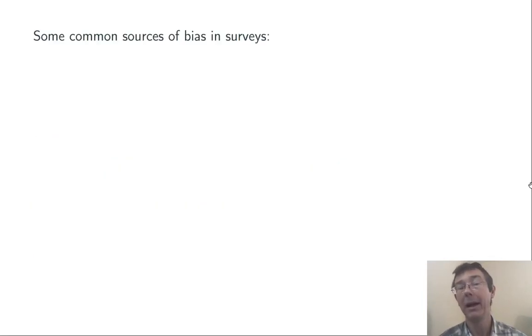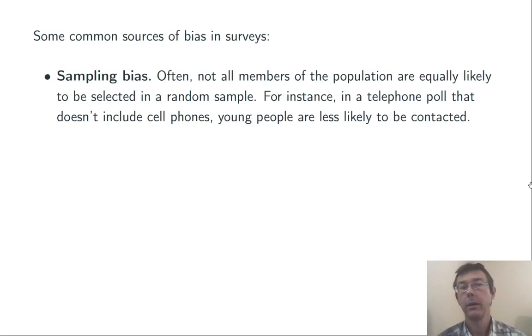Here are a few common sources of bias in surveys. Sampling bias. Often, not all members of the population are equally likely to be selected in a random sample. For instance, if we do a telephone poll that doesn't include cell phones, we're more likely to contact older people than younger people, and the views of the people that we contact might end up being different on average than the views of the population overall.